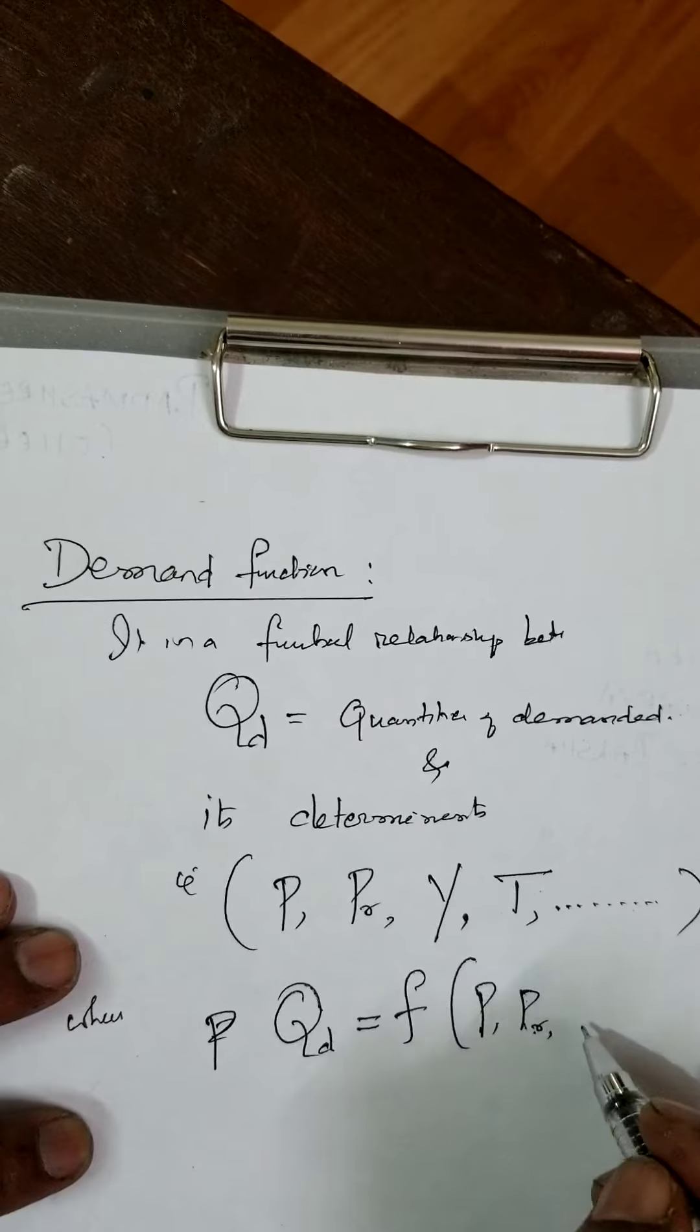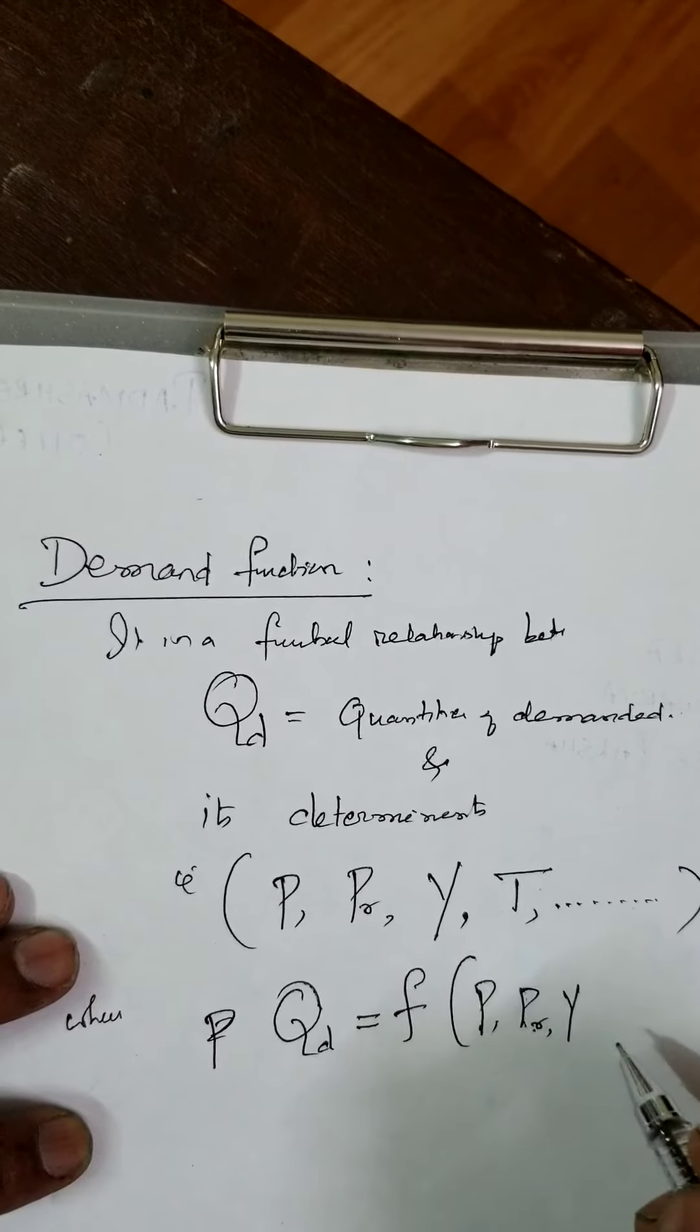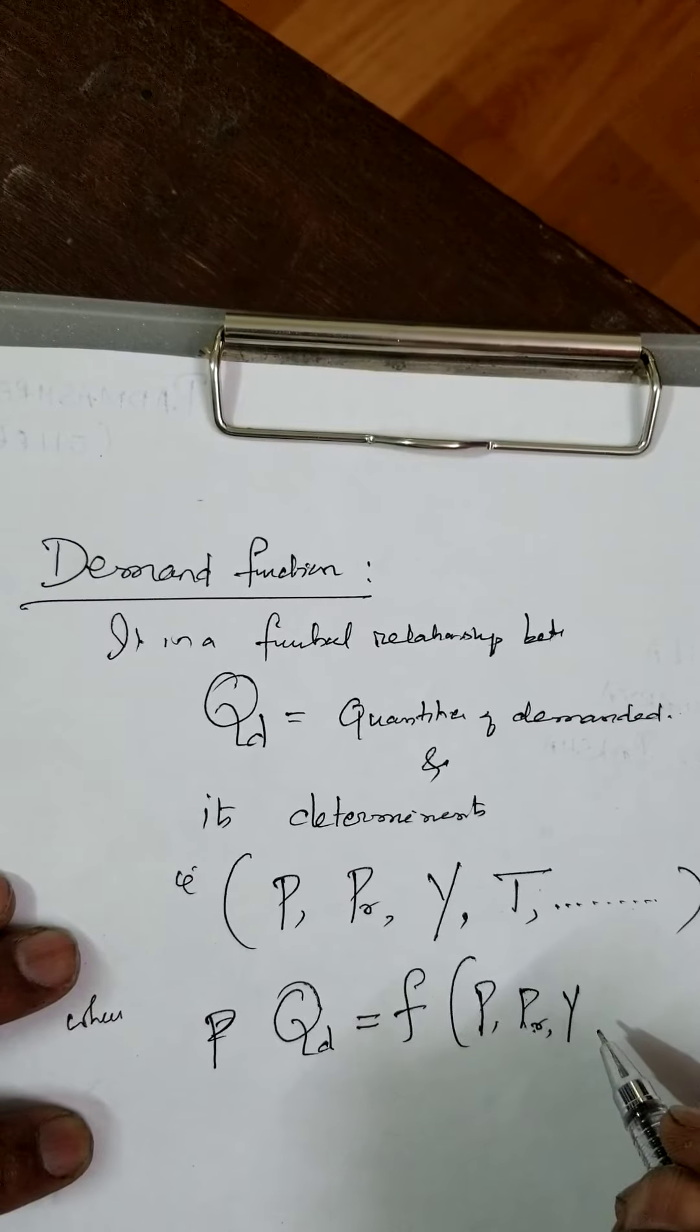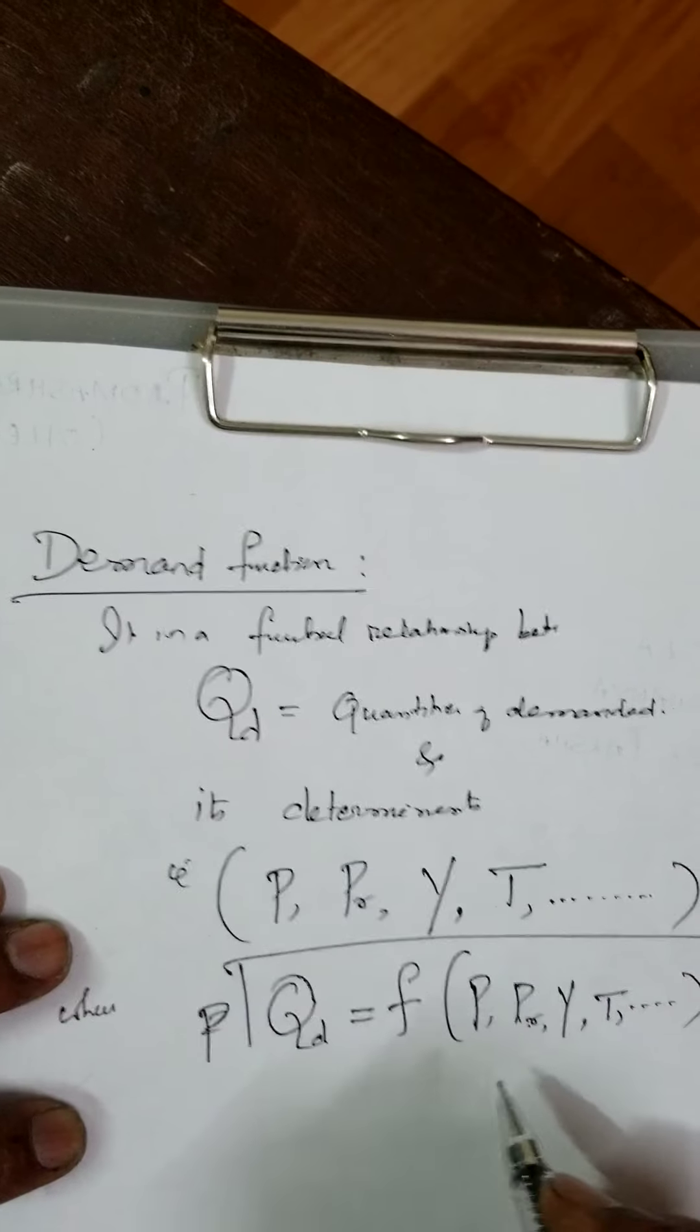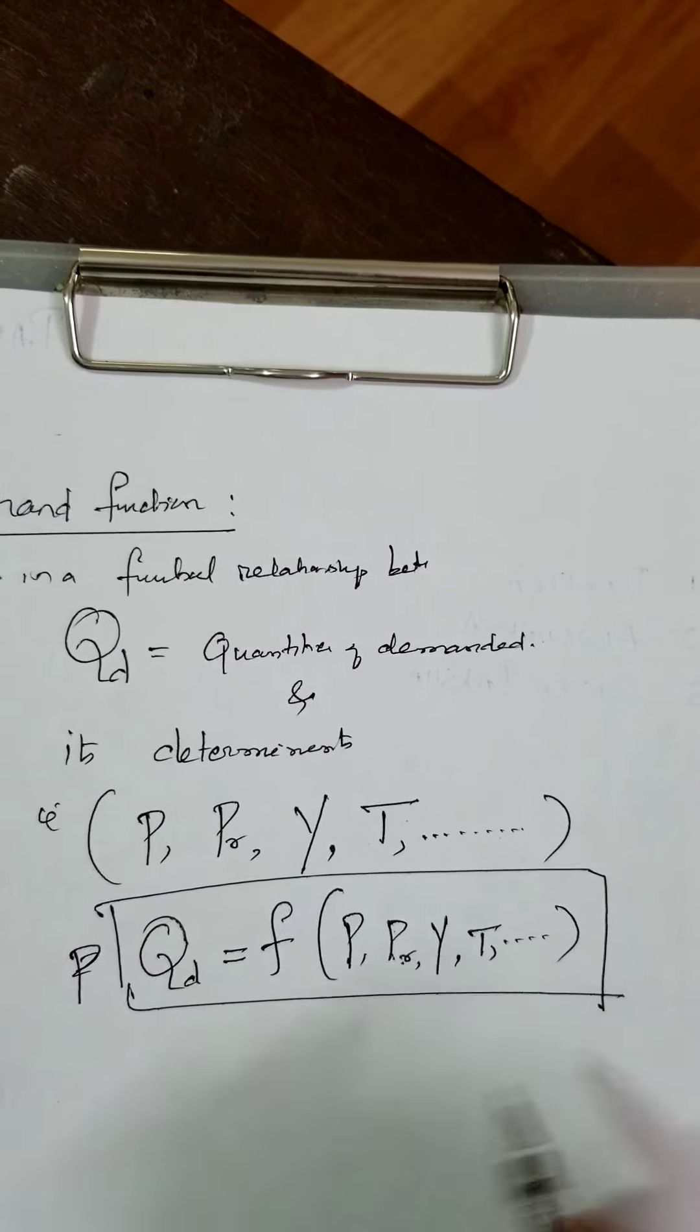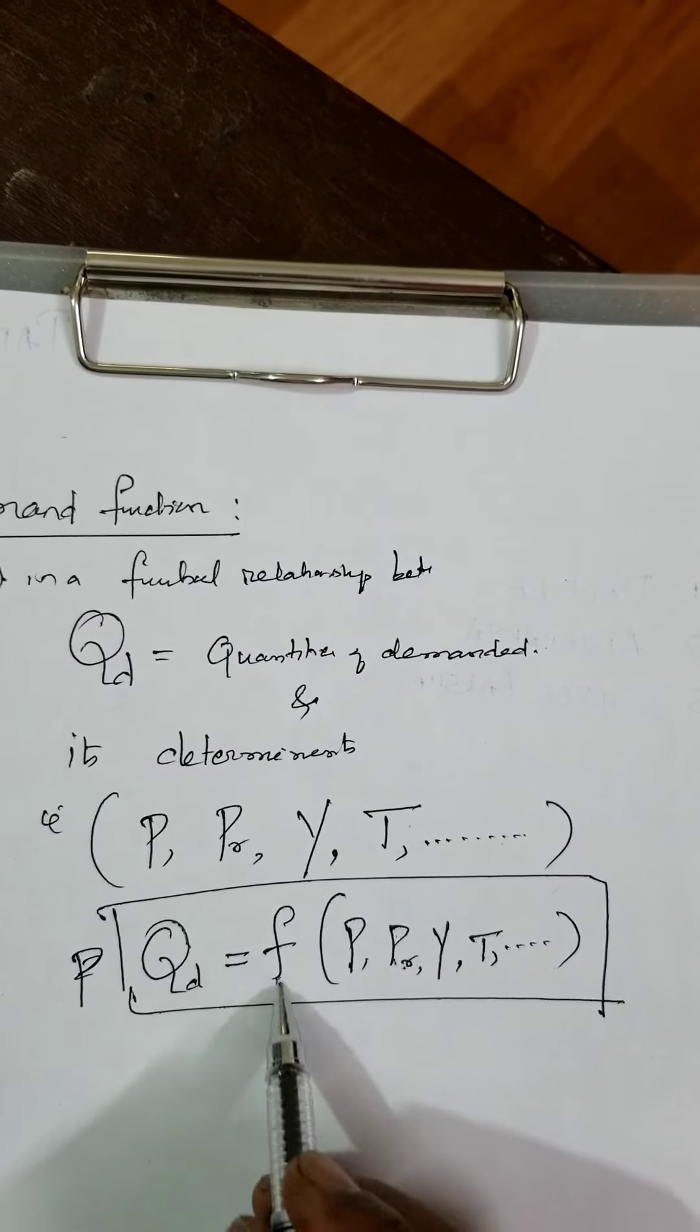This is called price substitutes. Then, Y is the income of the consumer and T is the taste. This is the demand function.